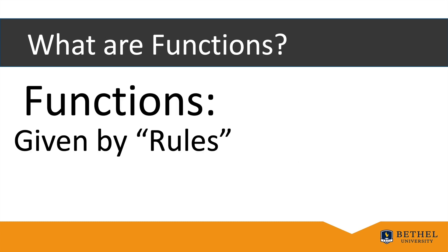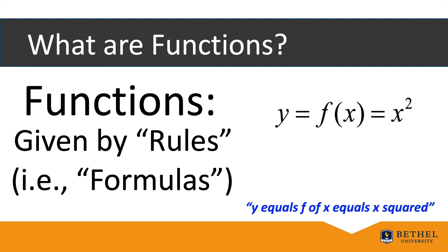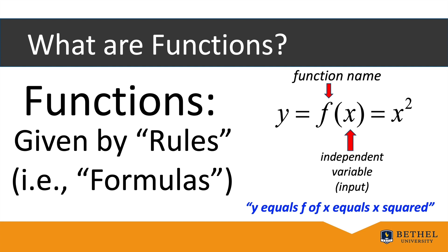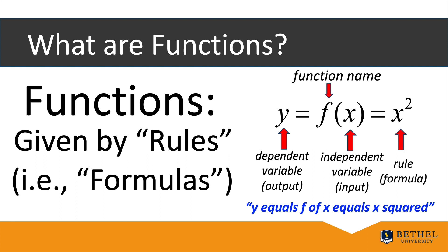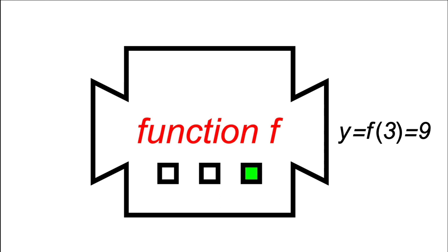Functions are given by rules, oftentimes formulas. A common function is y equals f of x equals x squared. The letter f is the function name, x is the independent variable (the input), and y is the dependent variable (the output). The rule x squared tells you how to find the output y from the input x. The function f can be imagined as a machine: it takes an input like x equals 3 and transforms it into an output f(3) = 3² = 9.